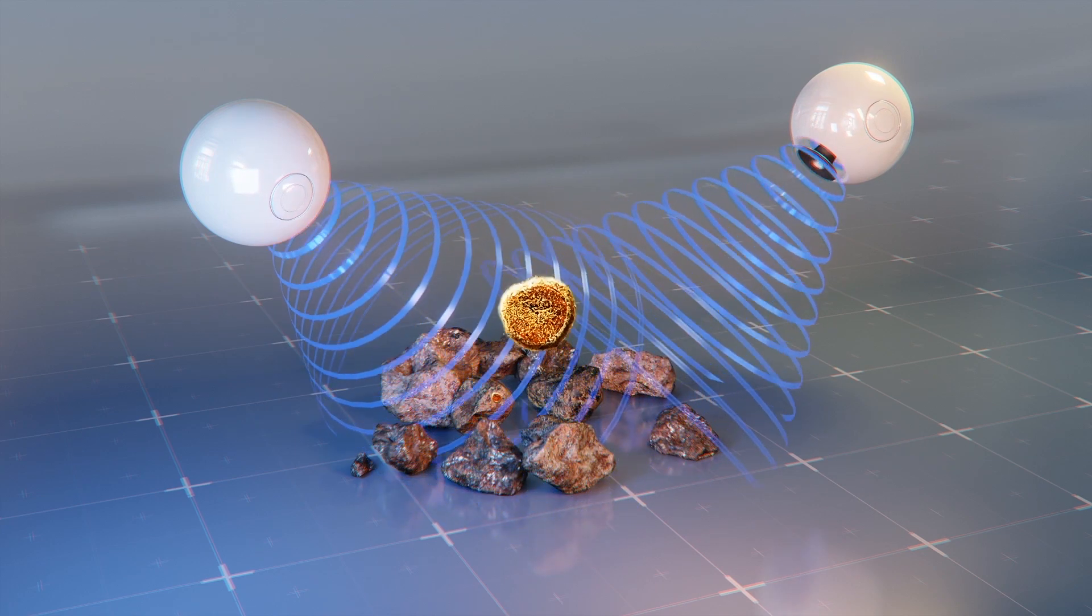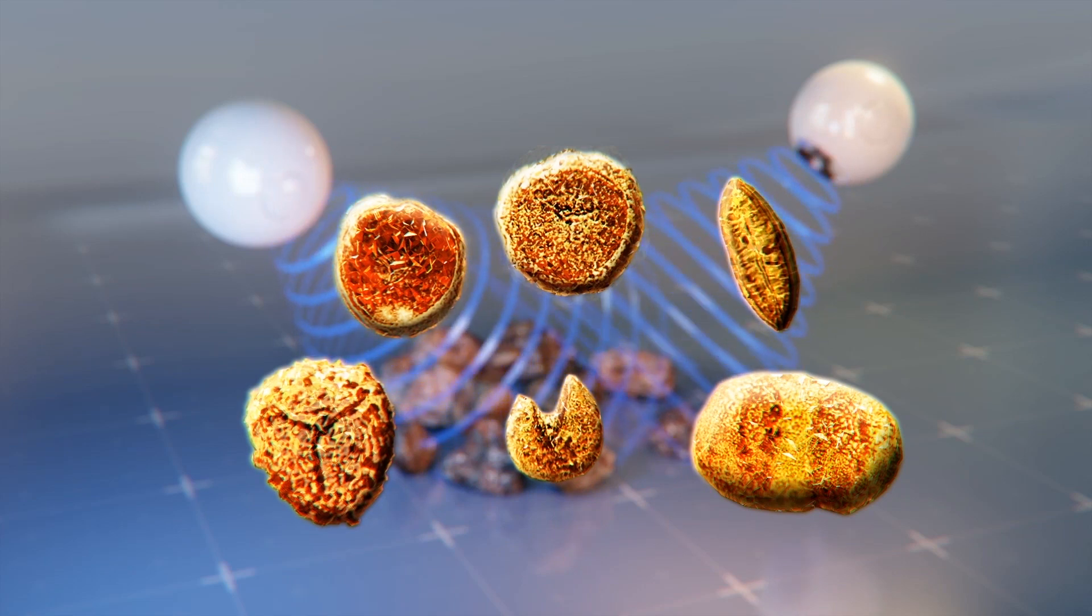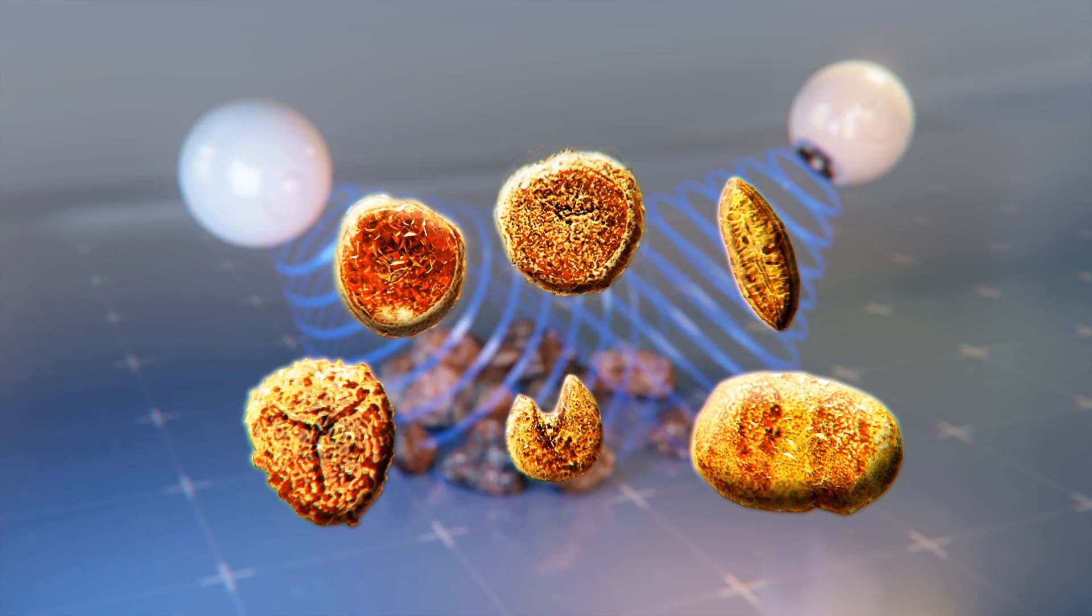They also found plant spores deposited in rocks from the Devonian Carboniferous boundary that appeared to have been damaged by ultraviolet radiation, signs of an ozone depletion event.